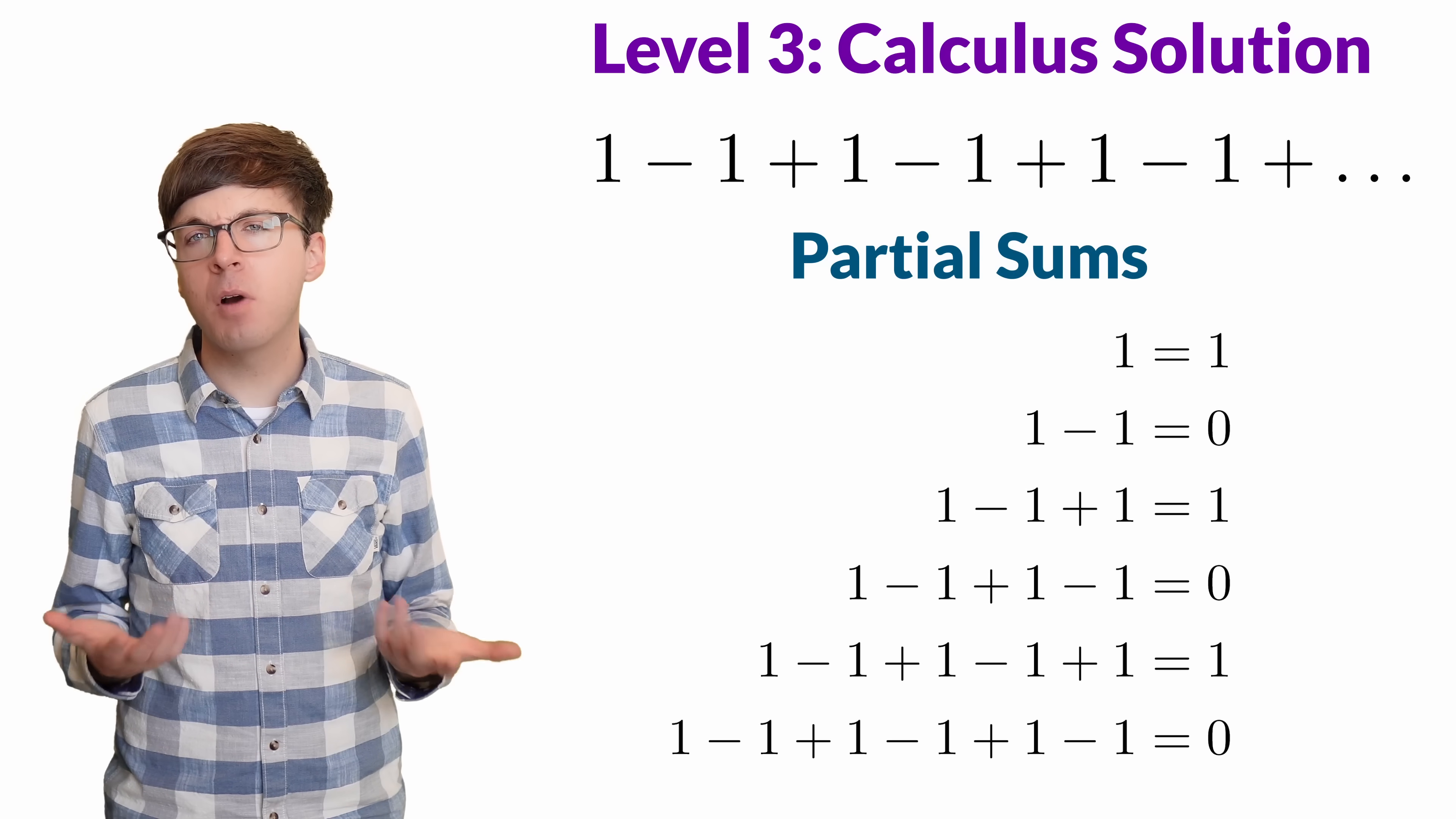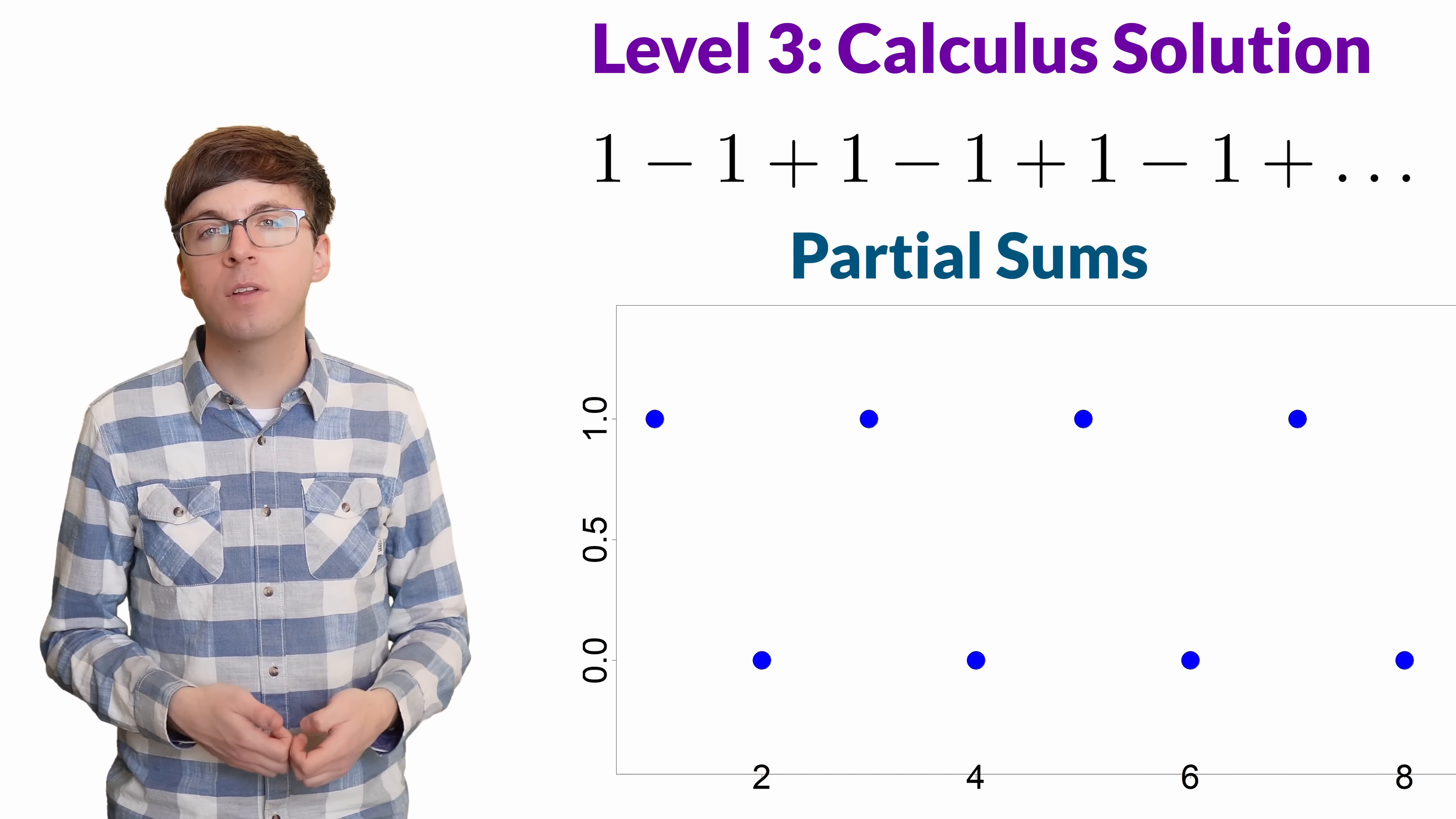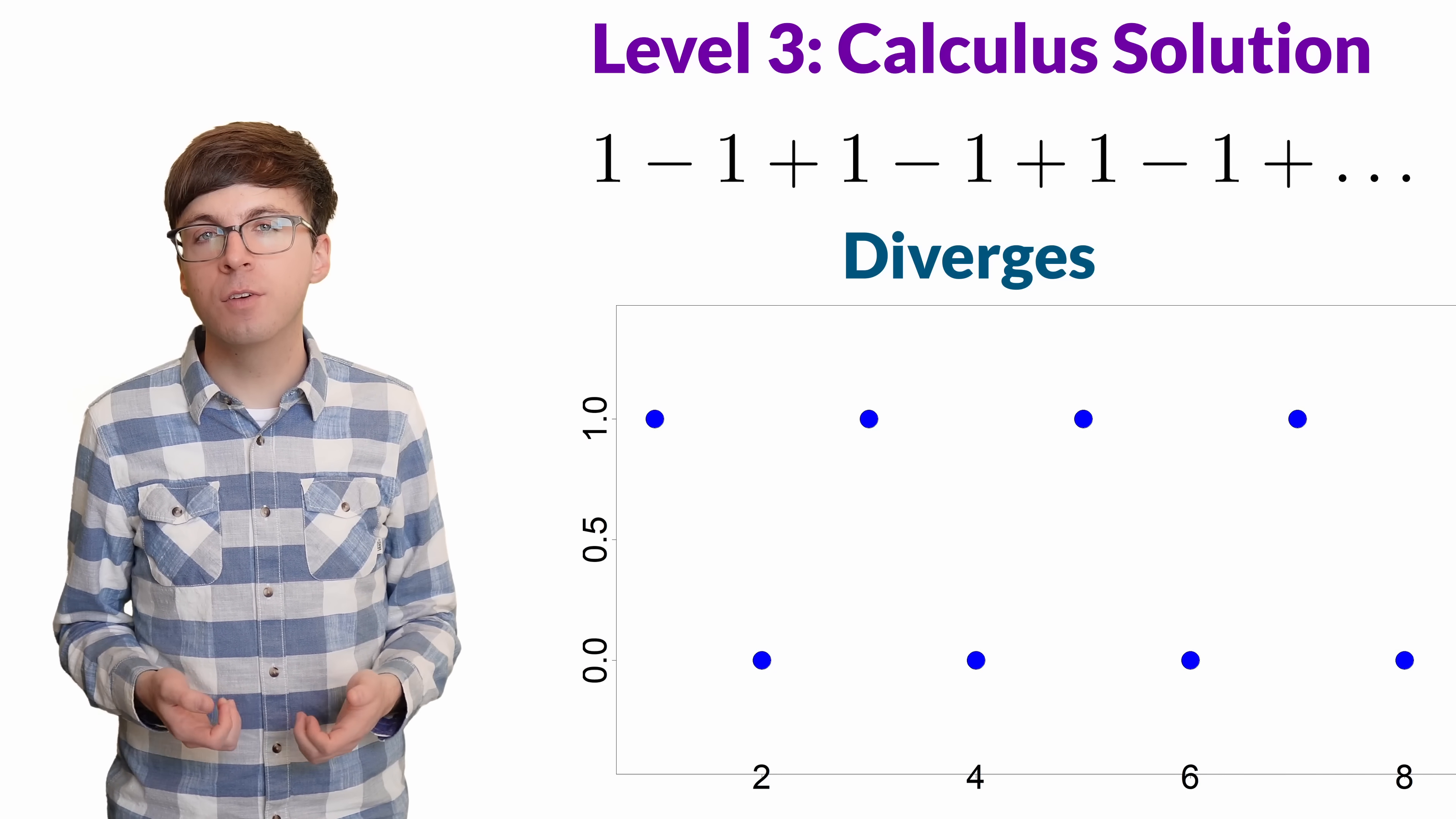In calculus, and modern math in general, we define the infinite series to be the limit of its partial sums. If the infinite series adds up to a value, then the partial sums should be getting closer and closer to that value. But in this case, the partial sums keep bouncing between 0 and 1. They never settle on any one specific value. So we say that this series diverges, and that the sum is not defined. So we have our rigorous answer. This series diverges. But mathematicians have found various ways of assigning values to certain divergent series like this one.